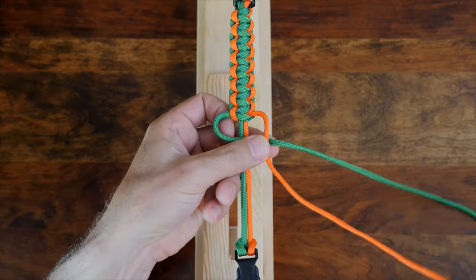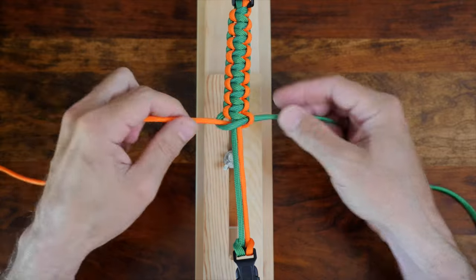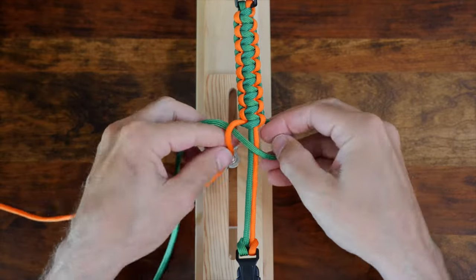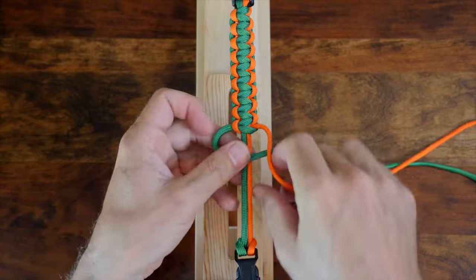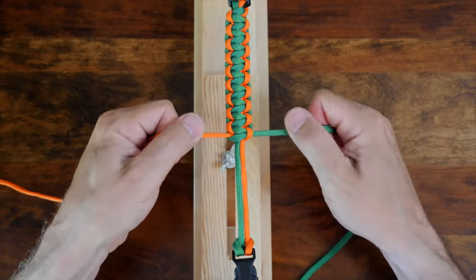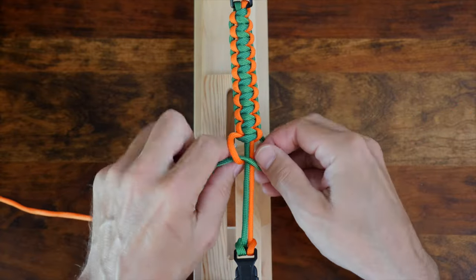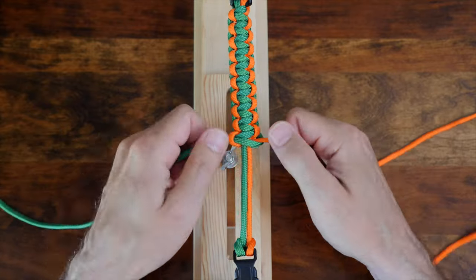One interesting thing about learning to tie knots is that it's an ancient skill. Did you know that decorative knot work like this is the oldest form of folk art? It's true, and there have been archaeological discoveries dating back thousands of years. I think that's pretty cool.